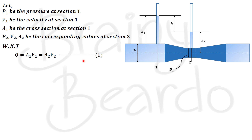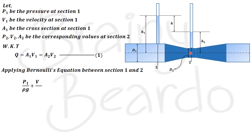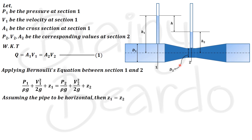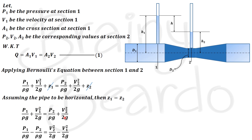To find expressions for v1 and v2, we apply Bernoulli's equation across sections 1 and 2: p1/ρg + v1²/2g + z1 = p2/ρg + v2²/2g + z2. Since the Venturimeter is horizontal, z1 and z2 are equal and cancel out. Rearranging with pressure terms on one side and velocity terms on the other gives: p1/ρg − p2/ρg = v2²/2g − v1²/2g.